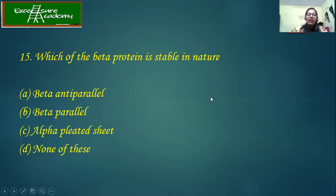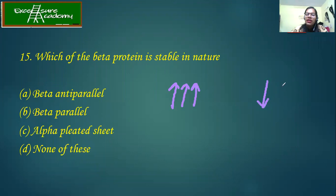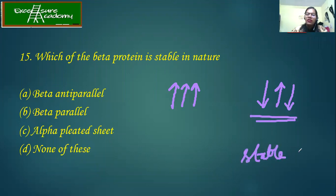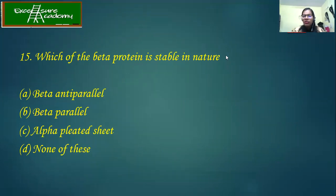Which beta protein sheet is more stable in nature? There are two types: beta parallel and beta antiparallel sheets. In the case of beta parallel the strands run in the same direction, while in antiparallel they run in opposite directions. Any protein having beta antiparallel sheets becomes more stable compared to the beta parallel. So here the answer is beta antiparallel. This becomes clearer when you study the 3D structure of proteins — most proteins taking the secondary and tertiary conformation have beta antiparallel sheets.